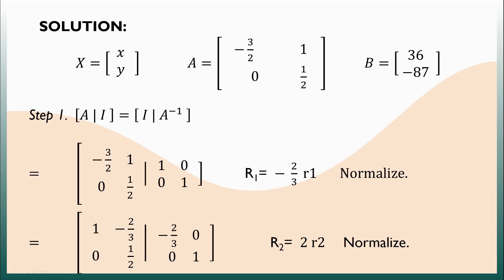Step 1 is getting the inverse of the coefficient matrix. Since we have a 2 by 2 system, we will utilize a 2 by 2 identity matrix. The goal is to convert A into the form of I. We can see that our leading element is in row 1. The first thing we do is normalize row 1 by multiplying it by negative 2 thirds to get the value of 1. Negative 3 halves times negative 2 thirds equals 1. 1 times negative 2 thirds equals negative 2 thirds. Whatever we do on the left side should be applied to the right side, so row 1 on the right side becomes negative 2 thirds and 0.